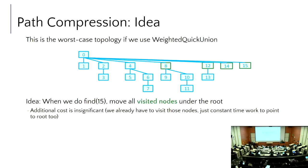It's called path compression because as we move up that path, we later compress that path and break it apart — instead of one long path, everybody's parent pointer gets updated directly to the overall root. The additional cost is insignificant since we already had to visit those nodes. This connects to a broader concept we'll cover later: as you run any algorithm, is there something you can learn about your data structure to store or update it so that future performance is better?